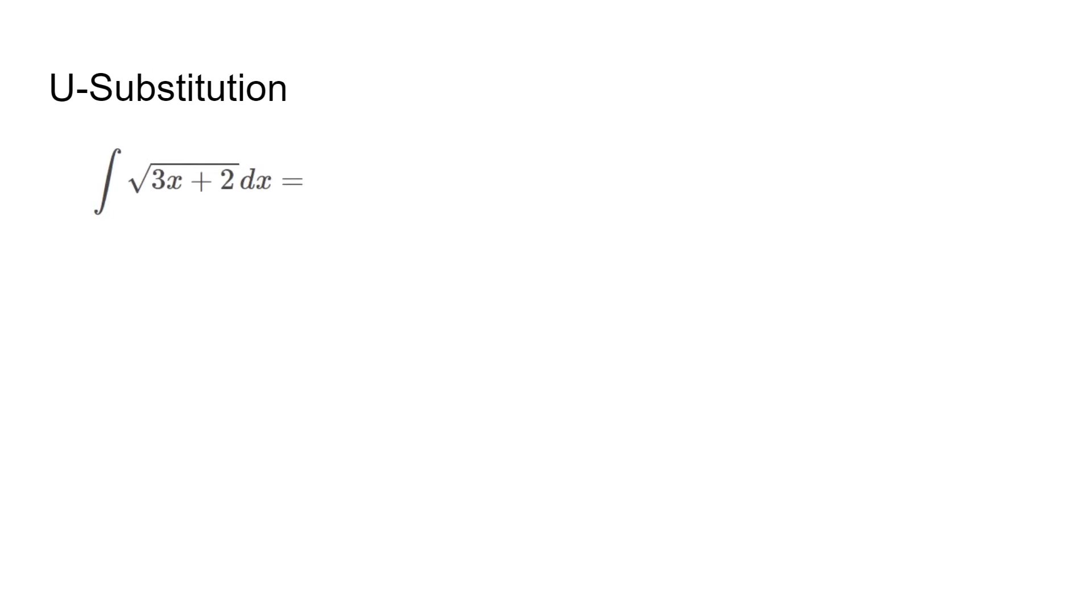The last topic is u-substitution. Just like the chain rule for derivatives, sometimes we have multiple functions to integrate and need to undo them. With this example, we can write it as the power of 1 half and substitute u equals 3x plus 2, since it is inside the function of square root. Most of the time, the inner function or function with higher power is u. We differentiate u to get du equals 3 dx and find dx equals du over 3. We plug it back in and our integral is 1 third u to the 1 half and it becomes 1 third times 2 thirds times u to the power of 3 over 2. We substitute u back in and get our answer. Make sure to add the plus c.